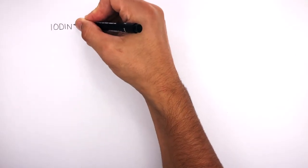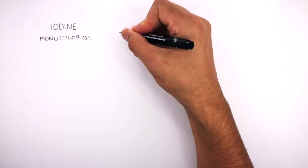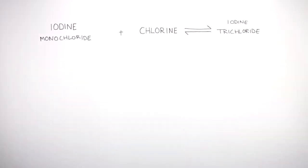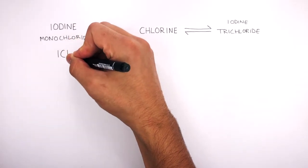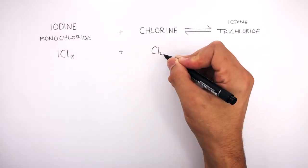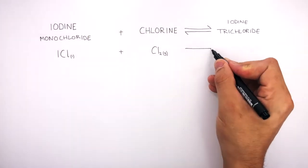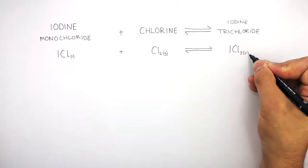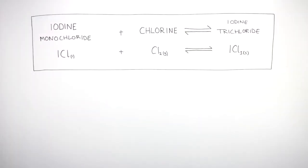In this reversible reaction, iodine monochloride reacts with chlorine to form iodine trichloride. The balanced symbol equation is ICl(l) reacts with Cl₂(g) to form ICl₃(s), and this is a reversible reaction.